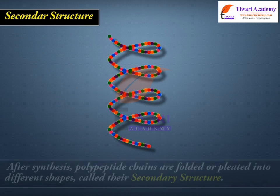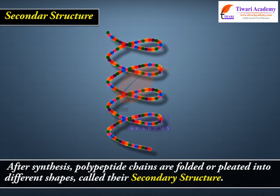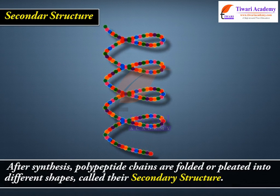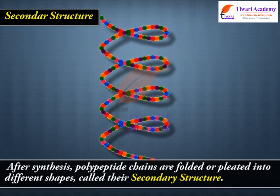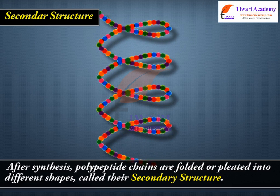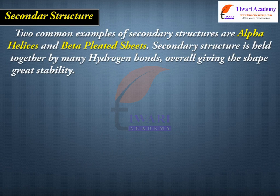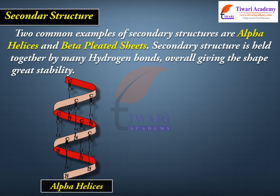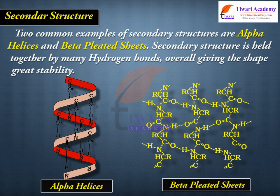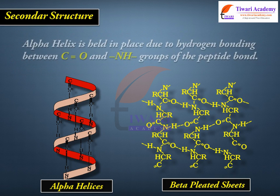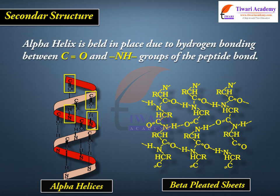Secondary structure. After synthesis, polypeptide chains are folded or pleated into different shapes, called their secondary structure. Two common examples of secondary structures are alpha helices and beta-pleated sheets. Secondary structure is held together by many hydrogen bonds, overall giving the shape great stability. Alpha helix is held in place due to hydrogen bonding between C=O and NH groups of the peptide bond.